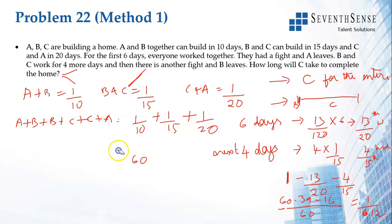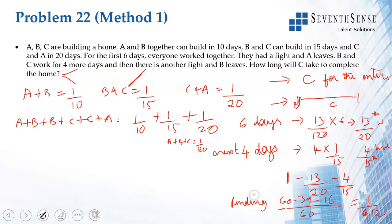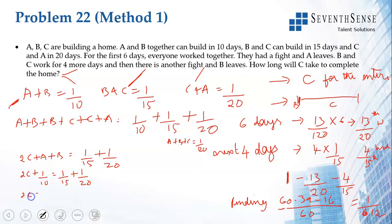We have A+B+C = 13/120. Now, adding equations 2 and 3 — B+C and C+A — gives 2C + A + B = 1/15 + 1/20. Since A+B = 1/10 from equation 1, substituting: 2C + 1/10 = 1/15 + 1/20. Taking LCM 60: 2C = 4 + 3 − 6 all over 60 = 1/60. Therefore C = 1/120. C does 1/120th of the work in one day.